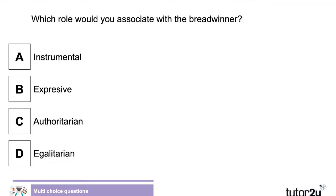Which role would you associate with the breadwinner? Is it the instrumental role, the expressive role, an authoritarian role, or an egalitarian role? Can you remember your Talcott Parsons roles in the family? The answer is A, the instrumental role. The expressive role was the more nurturing, caring role that Parsons associated with the mother or the woman in the family.